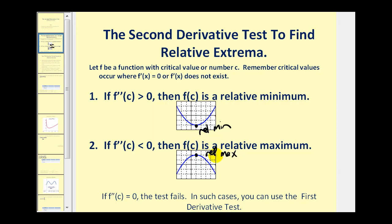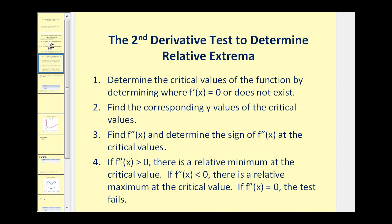It can be a lot less work to determine relative extrema by determining the sign of the second derivative. If the second derivative equals zero at the critical number, the test fails and we have to use the first derivative test. We'll first find the critical numbers by determining where the first derivative equals zero or does not exist.